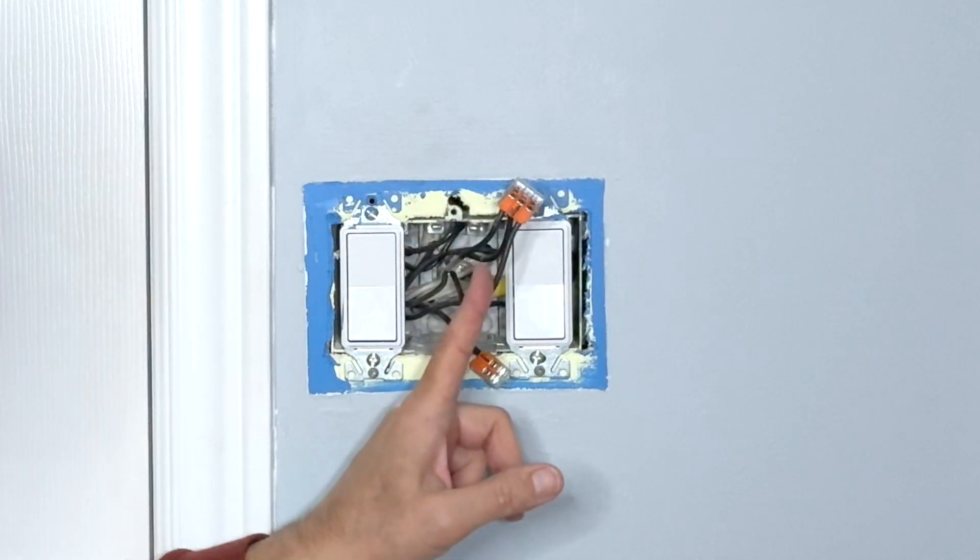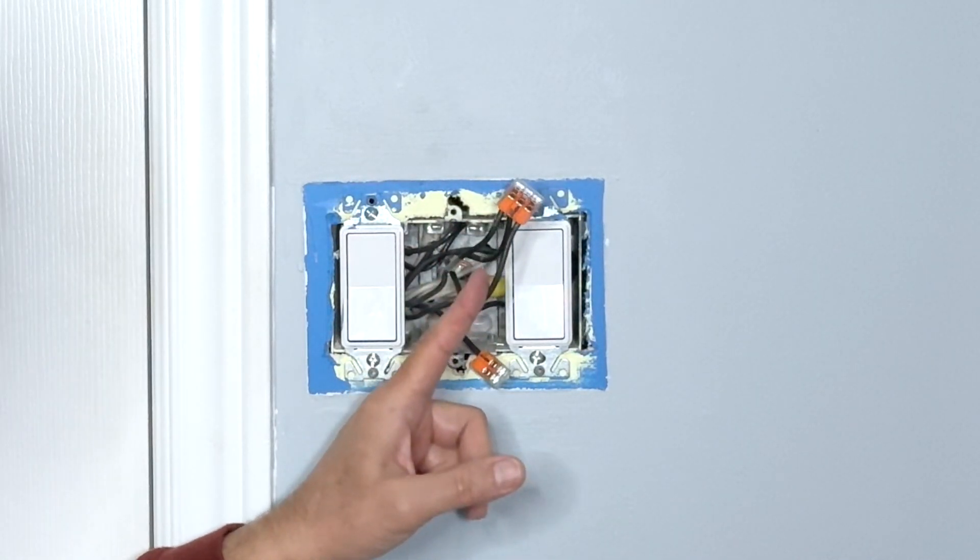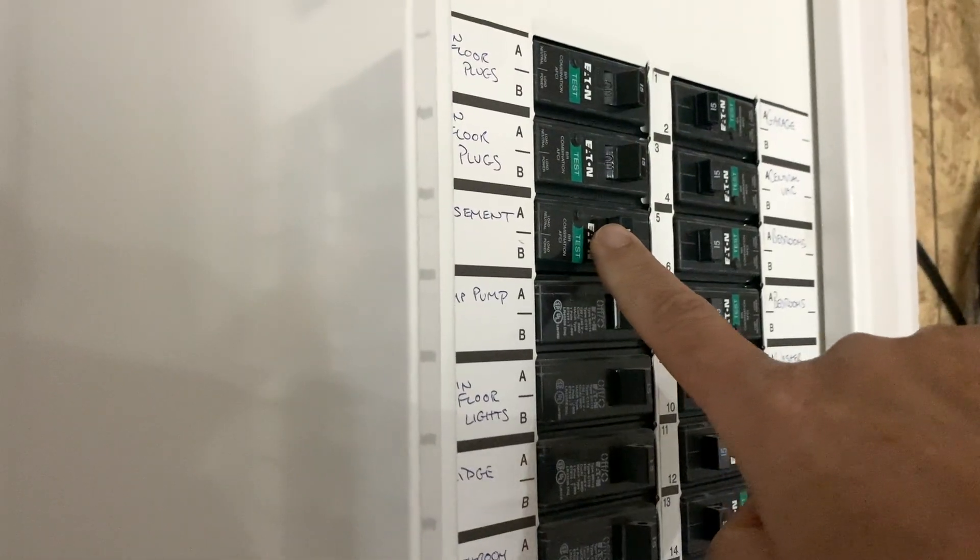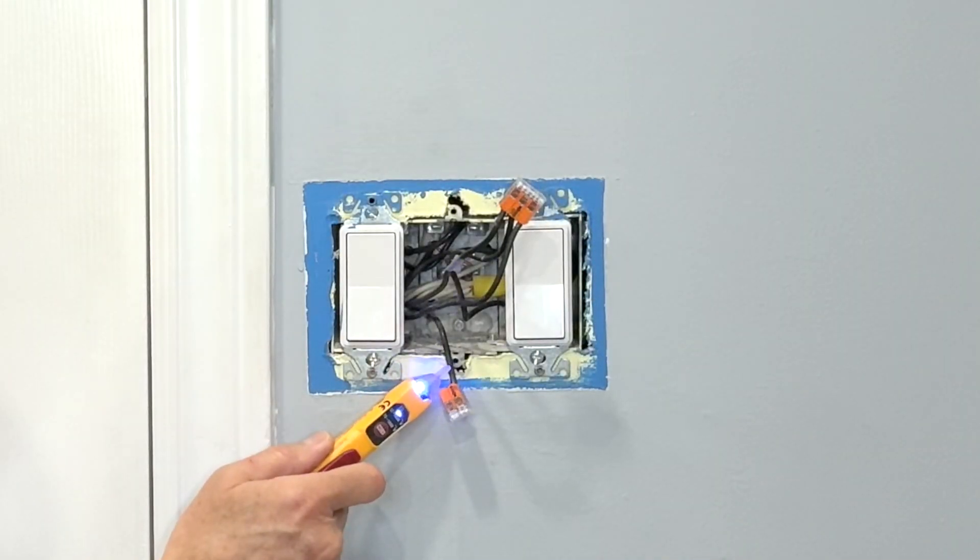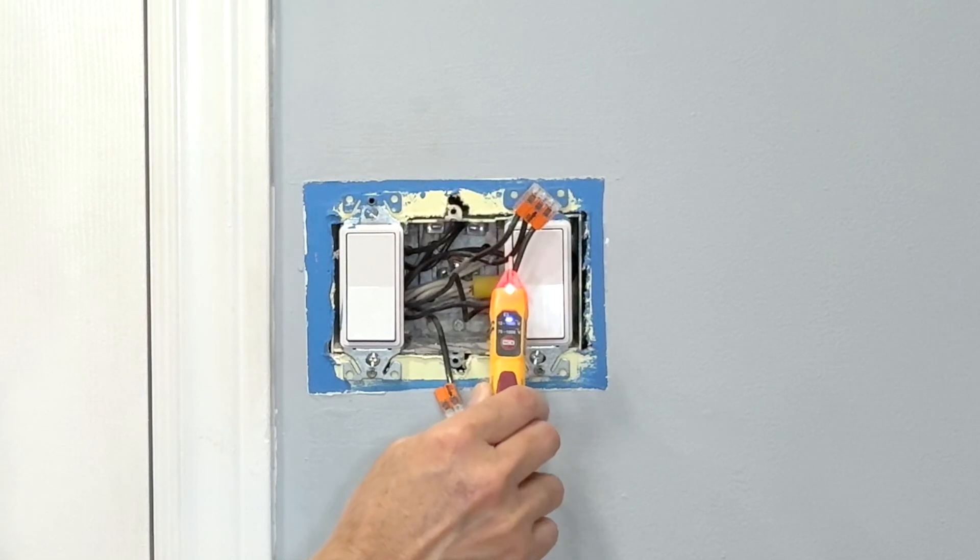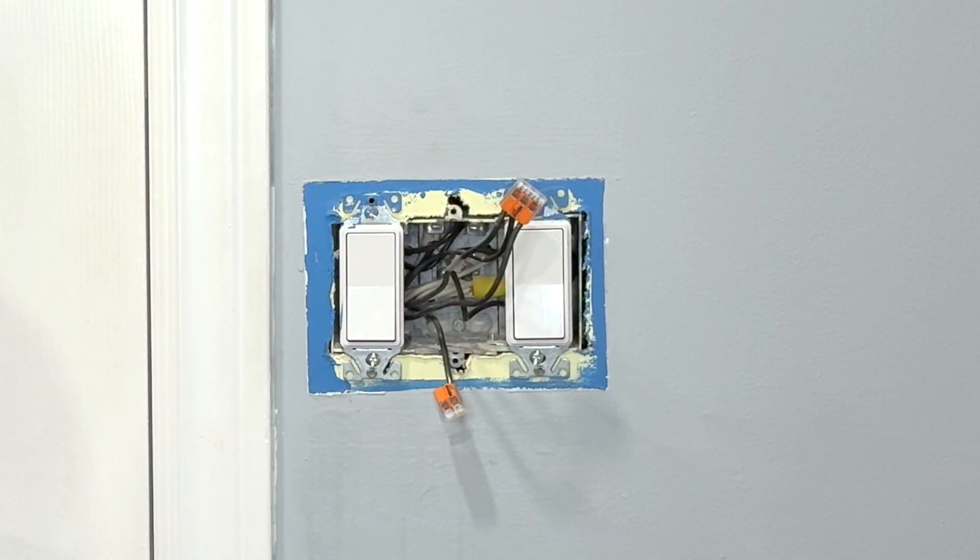This is a good thing about WAGO lever nut connectors. You can use them, remove them and then reuse them. I will now go and turn on the circuit breaker. Circuit breaker is on. Nope. So this was the load wire and all these wires are the line wires. I will now turn off the circuit breaker again and then connect the new timer switch.